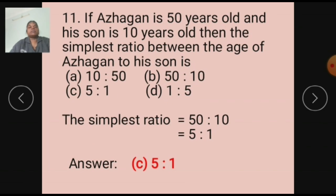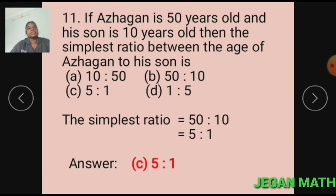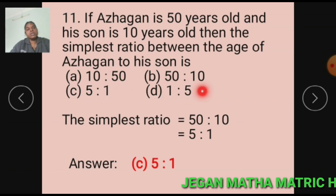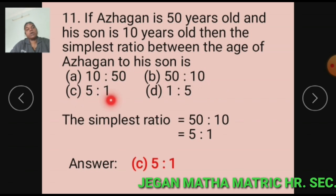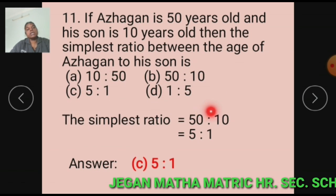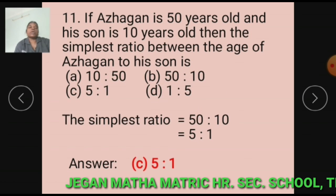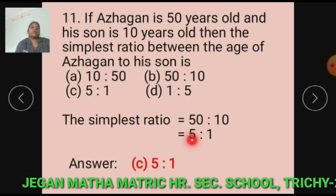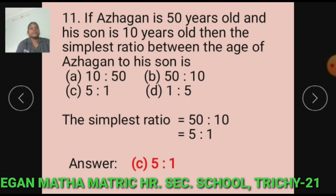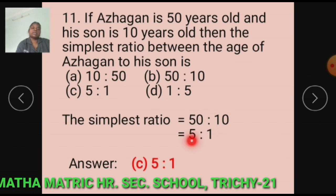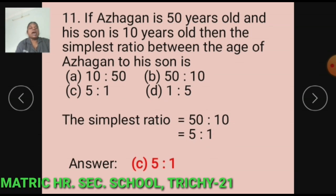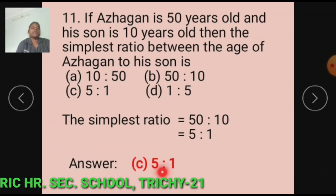Question number 11: If Allagan is 50 years old and his son is 10 years old, then the simplest ratio between the age of Allagan to his son is dash. Option A: 10 is to 20. Option B: 50 is to 10. Option C: 5 is to 1. Option D: 1 is to 5. The simplest ratio equals 50 is to 10. 50 and 10 are simplified by 10, so we get 5 is to 1. The answer is Option C: 5 is to 1.